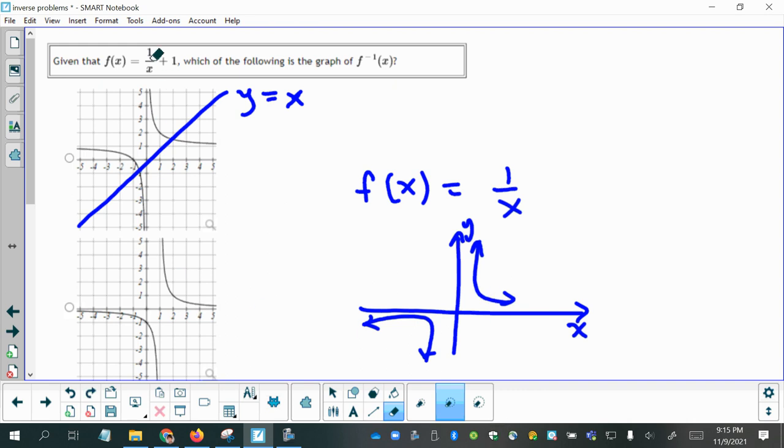And if you were to just shift that up one unit, then you would have this function, because remember when you add a value onto the outside of a function, it shifts it up, or if you subtract, it shifts it down. You can also add something to x and move it to the left, or subtract something from x and move it to the right.